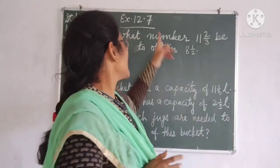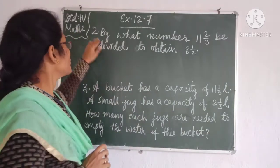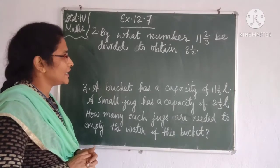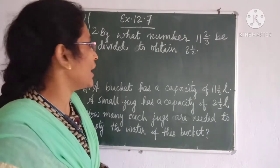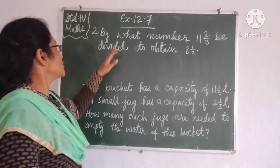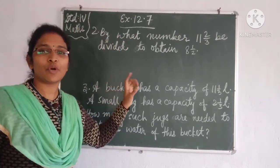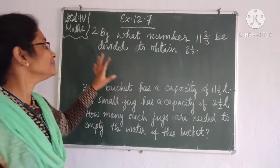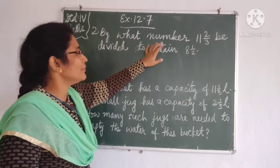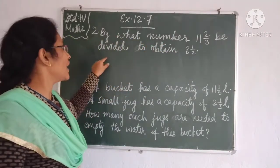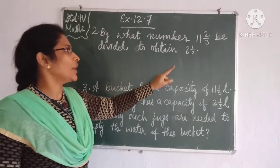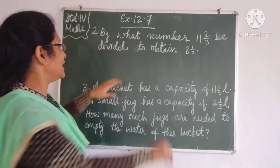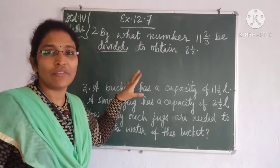We can see exercise 12.7, question number 1: by what number should 11 and 2/3 be divided to obtain 8 and 1/2? Whenever you get a word problem, you should read the question at least twice to understand what is asked. The phrase 'be divided' tells us it is about a division process.